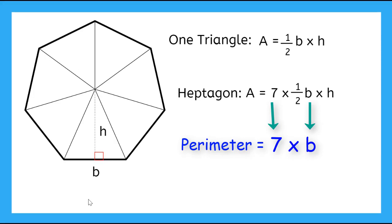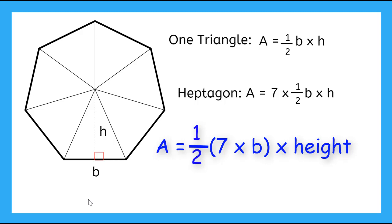So I can rewrite the formula for my heptagon as area equals 1 half times perimeter times height. But since we aren't relying on our triangle anymore, we can call the height the apothem.